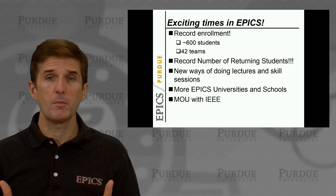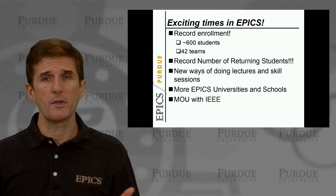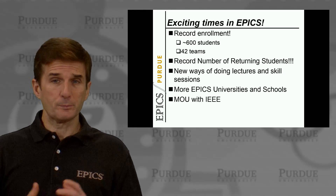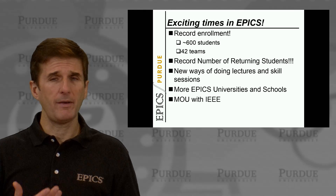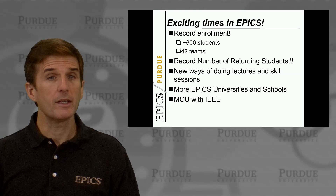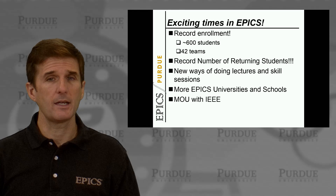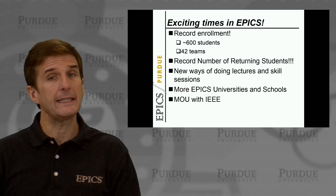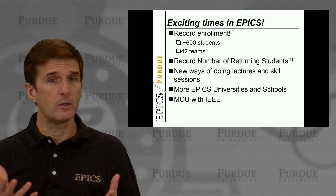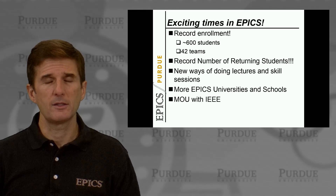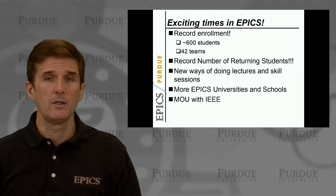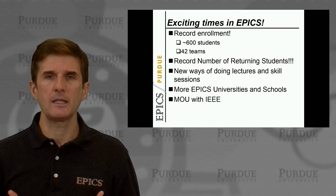We're growing in numbers both at Purdue and at other institutions. We've got about 35 other schools around the world that have EPICS, including high schools and middle schools all across the United States. One of the exciting things that happened this fall is we signed a Memorandum of Understanding — an MOU — with IEEE, the Electrical and Computer Society, which is the largest professional society in the world, and they're really excited about working with EPICS.